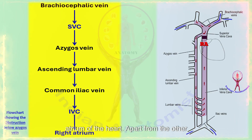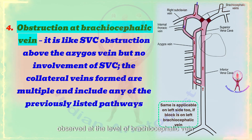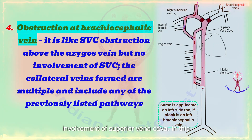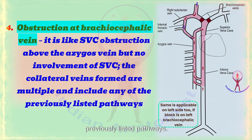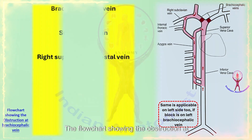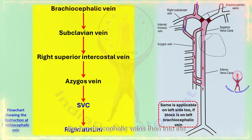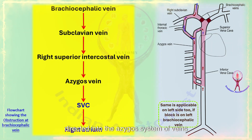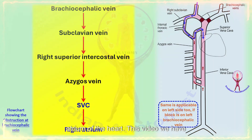Apart from the three types, a fourth type of obstruction is observed at the level of the brachiocephalic vein. It is like superior vena cava obstruction above the azygos vein but without the involvement of the superior vena cava. In this type, the collateral veins formed are multiple in number and include any of the previously listed pathways. The venous blood is collected through the brachiocephalic veins, then into the subclavian vein, then the right superior intercostal vein, directed into the azygos system of veins, and from there collected into the superior vena cava, finally draining into the right atrium.